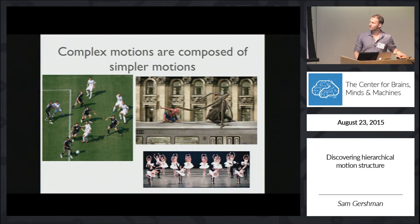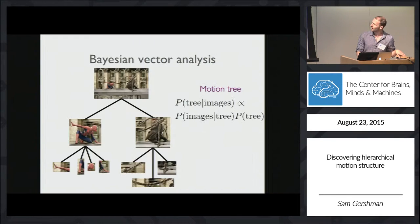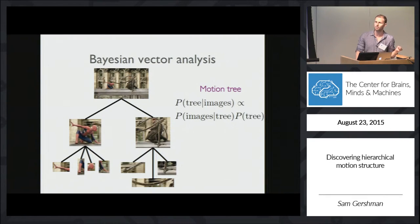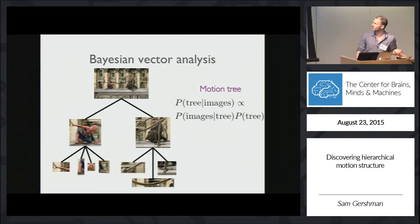So how do we extract this kind of hierarchical motion structure from dynamic scenes? In collaboration with Frank Yackel and Josh Tenenbaum, we've formalized this as a form of what we call Bayesian vector analysis. The basic idea is that the underlying representation that the visual system is trying to extract is what we call a motion tree.